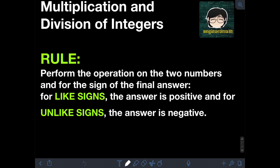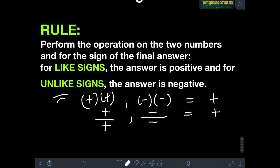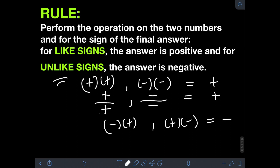For like signs — if the two integers are both negative or both positive — the answer is positive. So positive times positive, or negative times negative, gives a positive answer. Likewise for division: positive divided by positive, or negative divided by negative, gives a positive answer. For unlike signs, the answer is negative — that is, if we multiply or divide one negative and one positive integer. So negative times positive, or positive times negative, gives a negative answer. Likewise for division: negative divided by positive, or positive divided by negative, gives a negative answer.